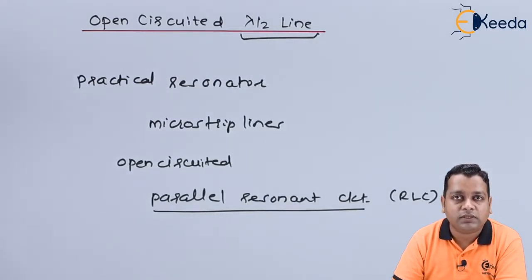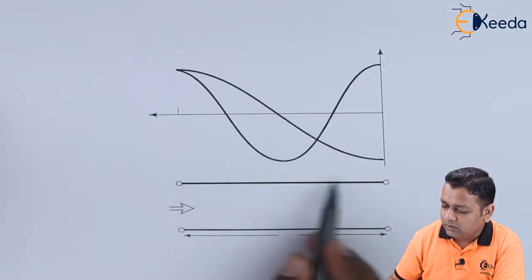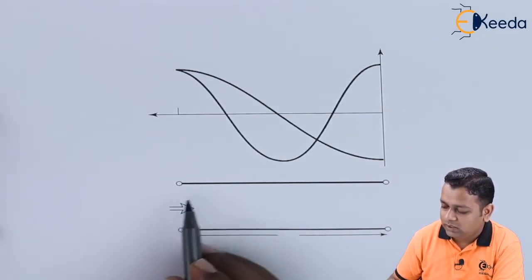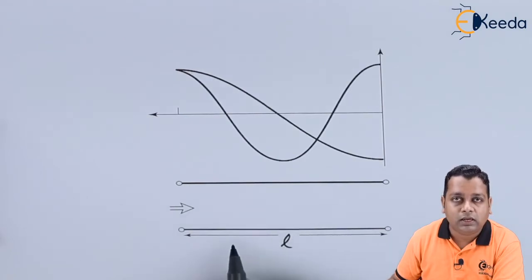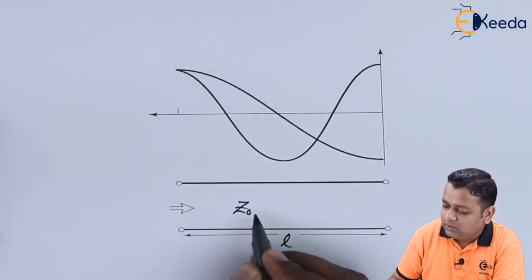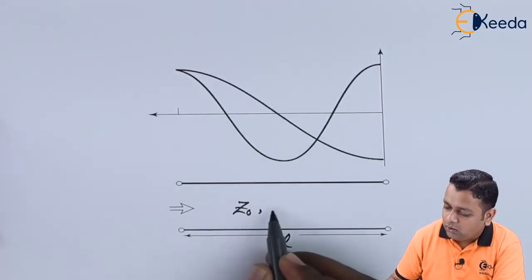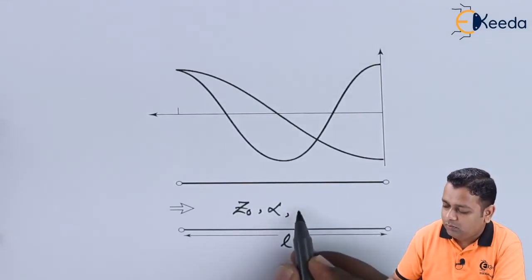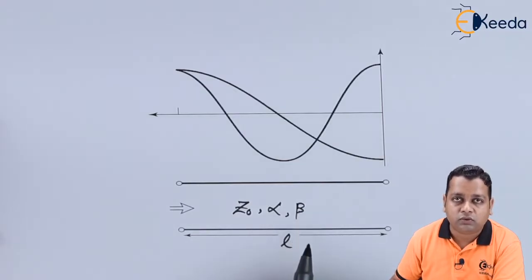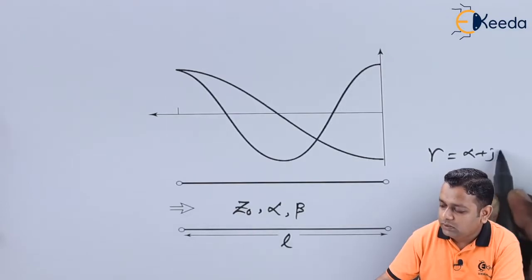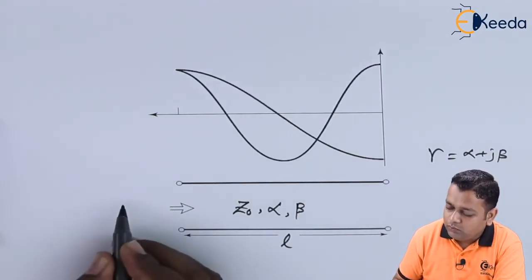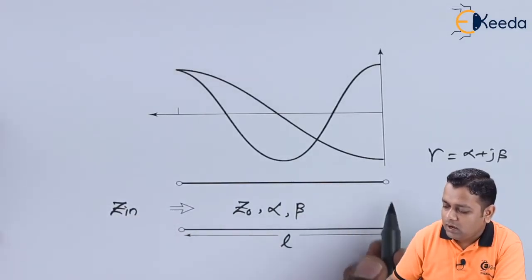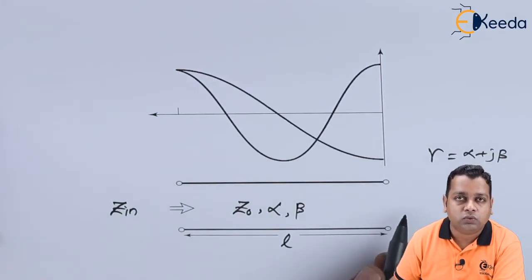Let us analyze the input impedance for the case of an open-circuited λ/2 transmission line. In this schematic diagram we consider this transmission line with two lines extending from one pair of nodes to another pair of nodes. In general, L is the length of the microwave transmission line, and this transmission line is characterized by characteristic impedance Z₀ along with some attenuation content α and phase variation β, so that together α + jβ accounts for the propagation constant γ. At the input side we mark the input impedance Z_in, and at the termination we have the open-circuited condition — no direct connection.